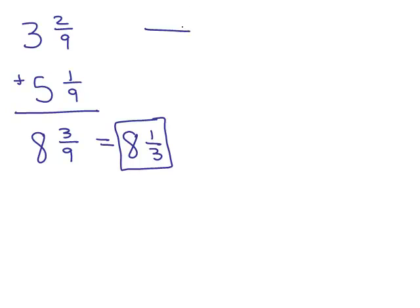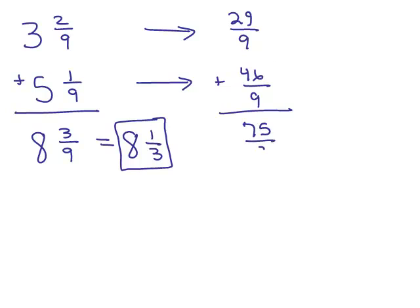You can also rewrite each of these as improper fractions first if you prefer. 9 times 3 is 27 plus 2, that's 29 ninths, plus 9 times 5 is 45 plus 1, that's 46 ninths. I don't usually like to do it this way because I have to add bigger numbers together. 29 and 46 gives 75 ninths. At this point, you notice it's an improper fraction and it's also not reduced.